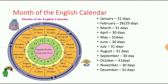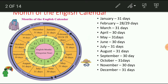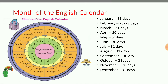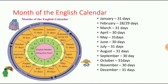Next: May. May is the fifth month. M-A-Y, May. How many days in May? 31 days.